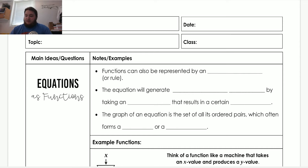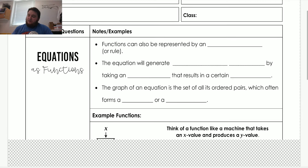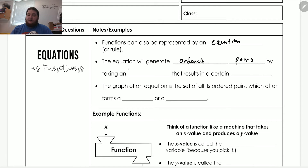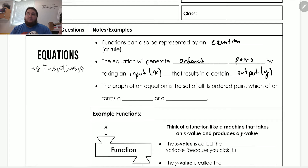What we're going to be doing today is talking about how functions can be represented. If we go to your notes, we have that functions can also be represented by an equation. This is the most general thing that you see — usually functions can be shown as equations, or sometimes as a rule. The equation will generate ordered pairs by taking an input, usually the x value, that results in a certain output. Only one input goes to one output, and that one input does not go into multiple outputs.